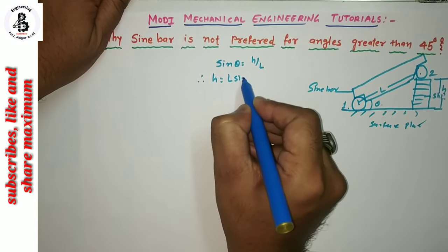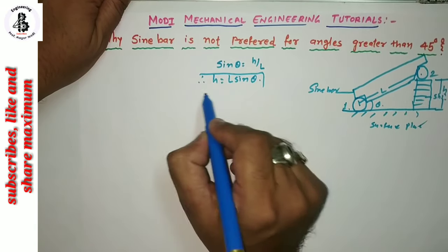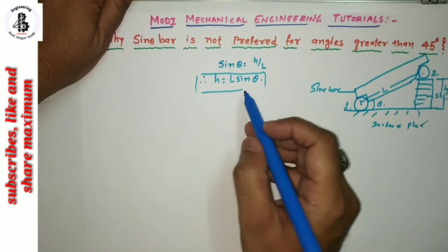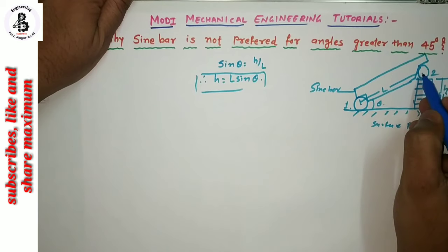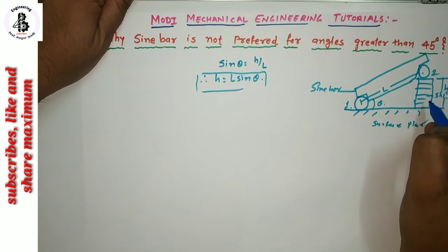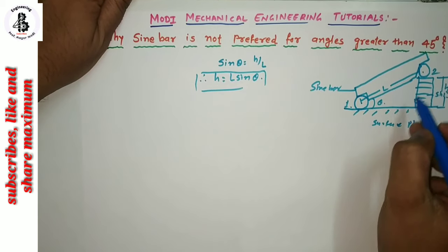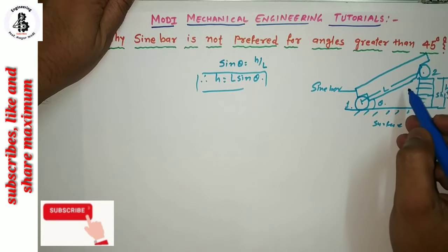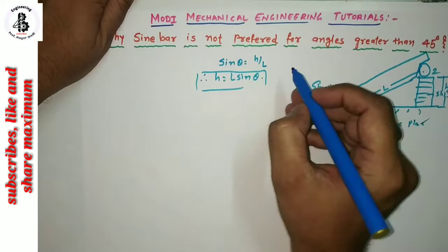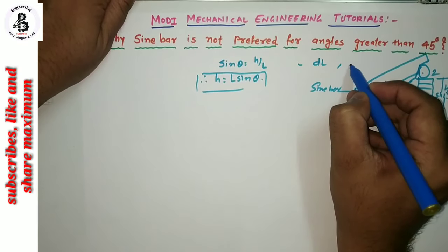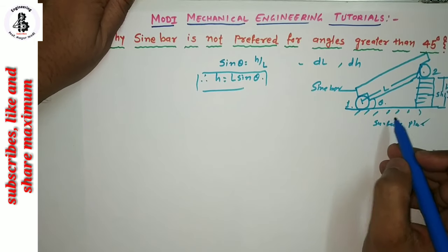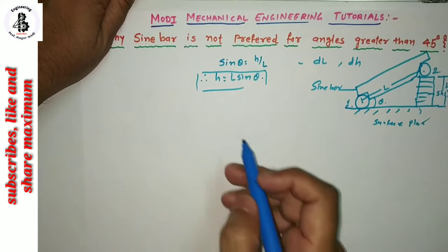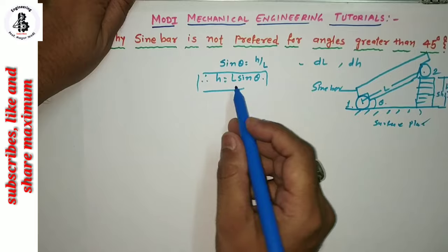H is equal to L sine theta. The accuracy of the angle set by the sine bar depends upon the errors in the center-to-center distance between the two rollers, or the number of slip gauges used for setting up the measurement of an angle. The effect of errors in the rollers — delta L — and in the slip gauges — delta H — are both calculated, representing distance errors in each component.